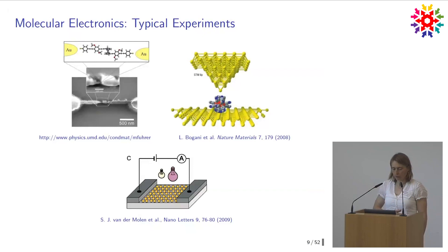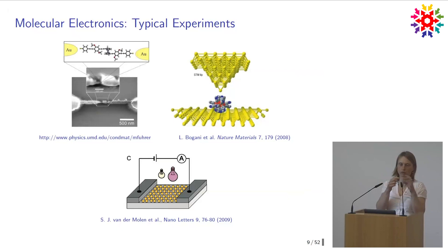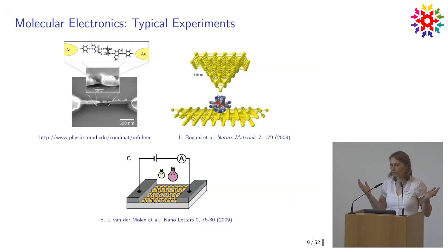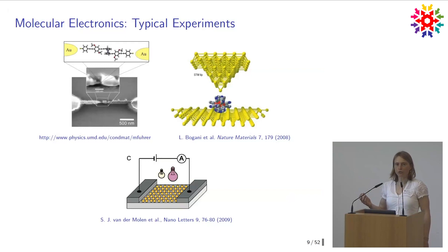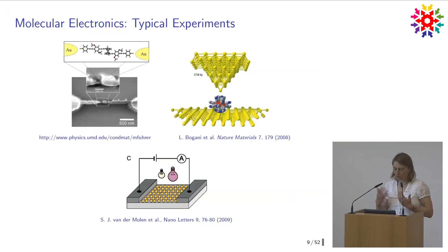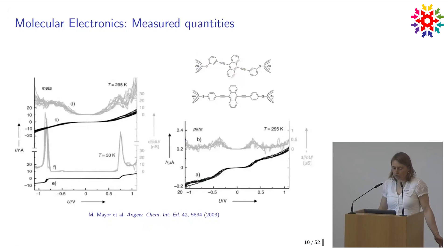To give a rough overview of what's happening in the experiment: there are different types of experiments. Break junctions involve pulling apart a gold wire in the presence of molecules, hoping for one molecule bridging — which works surprisingly well. There is also low-temperature STM data on how current flows through molecules, and more application-oriented setups use nanoparticle arrays where gold nanoparticles covered by ligands bridge when assembled. The quantities measured include current versus voltage curves.